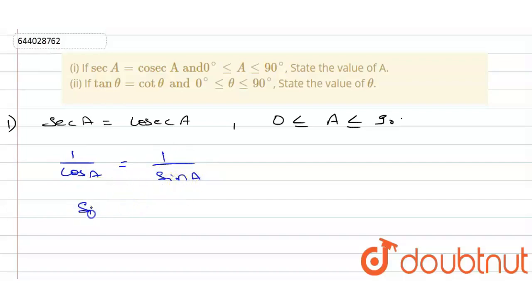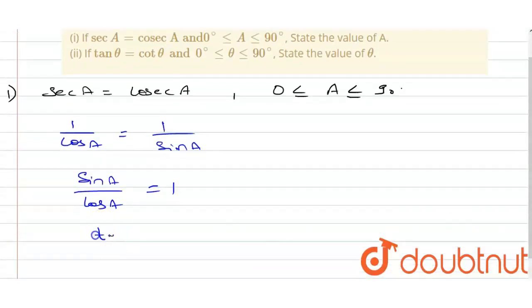We can take sin A on that side, so it will become sin A upon cos A is equivalent to 1. Now we know sin upon cos is tan. We can write it as tan A equals 1, and tan equals 1 means A equals tan inverse 1.